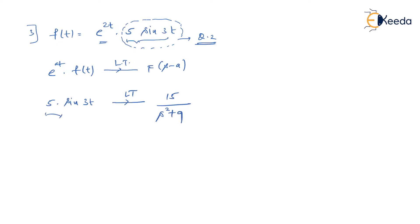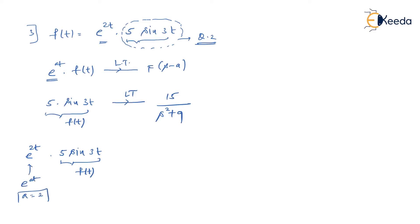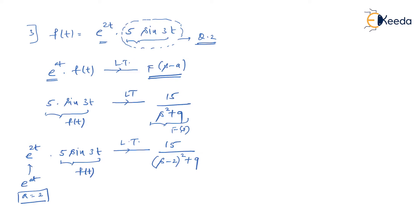Treating 5 times sine(3t) as f of t and e^(2t) as the exponential term, we identify a equals 2. To find F(s − a), we simply replace s with s minus 2 in our known F(s). Therefore, the Laplace transform of e^(2t)·5·sine(3t) is 15 upon (s − 2)² plus 9. That is the answer for question number 3.